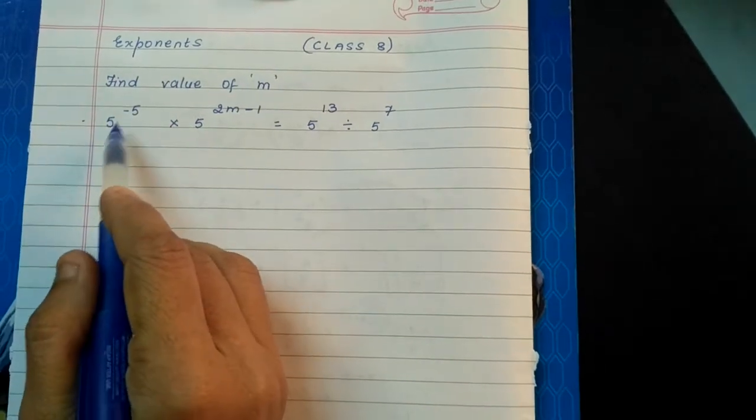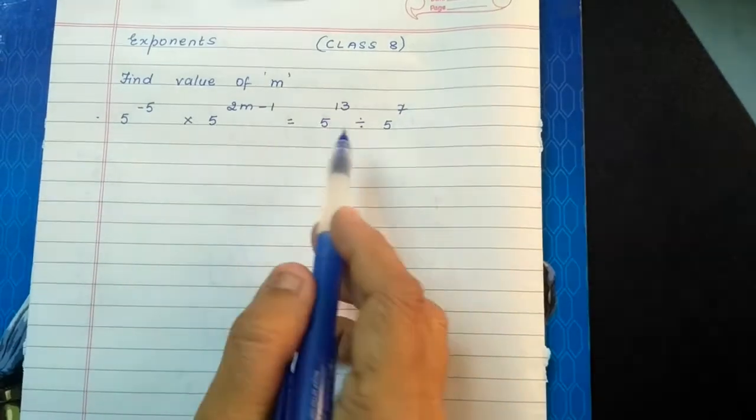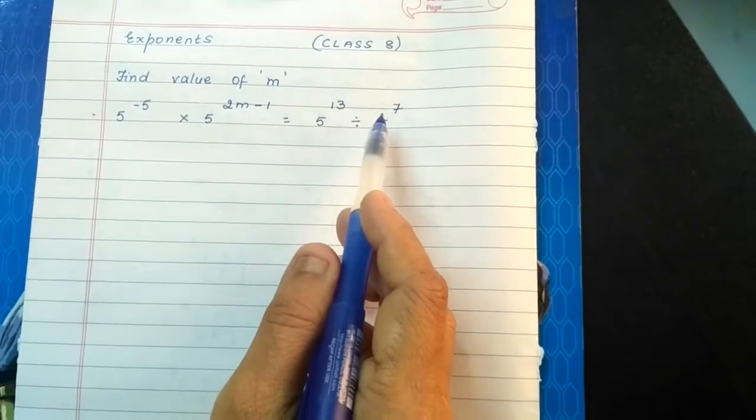Find value of m. φ^(-5) × φ^(2m-1) = φ^13 / φ^7.